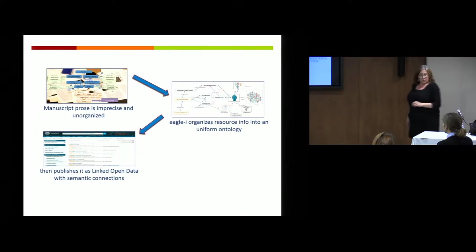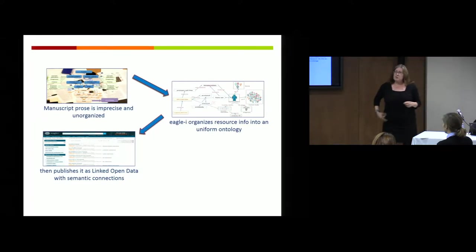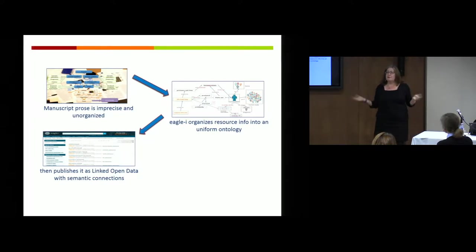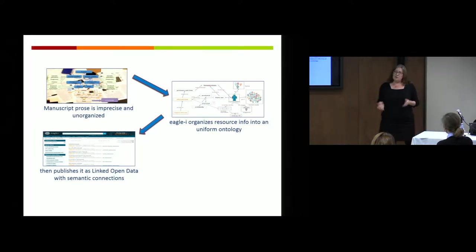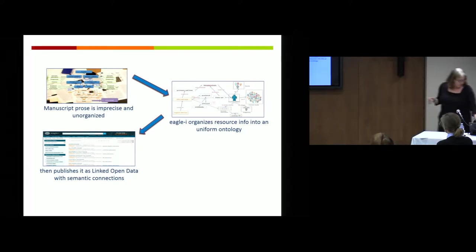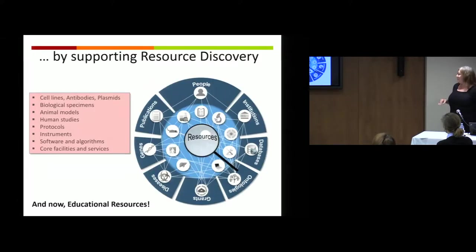The reason we did this is because a lot of research resources are trapped in the methods section of papers — they're in text, you can't find them. Eagle Eye takes those resources, describes them, and gives each one of them a URI, a persistent identifier.